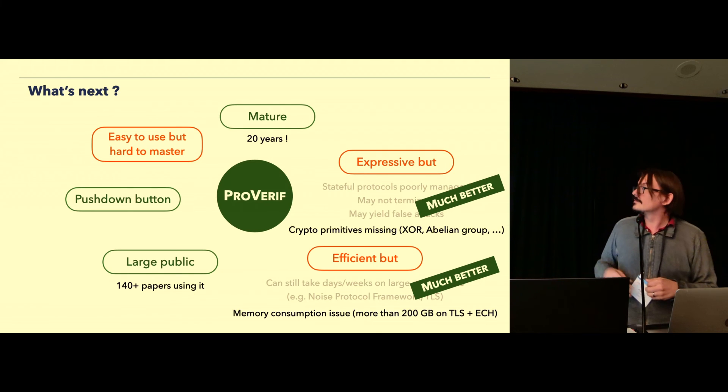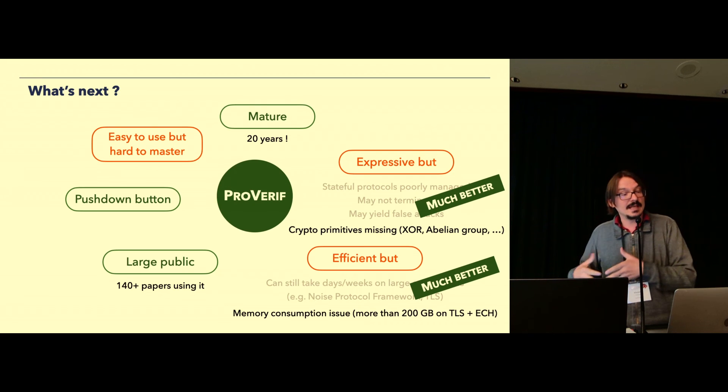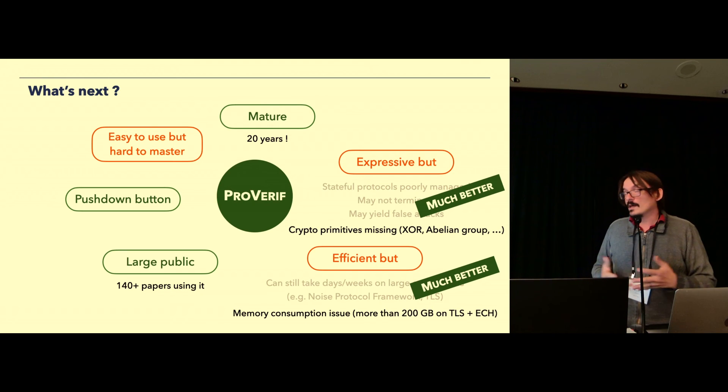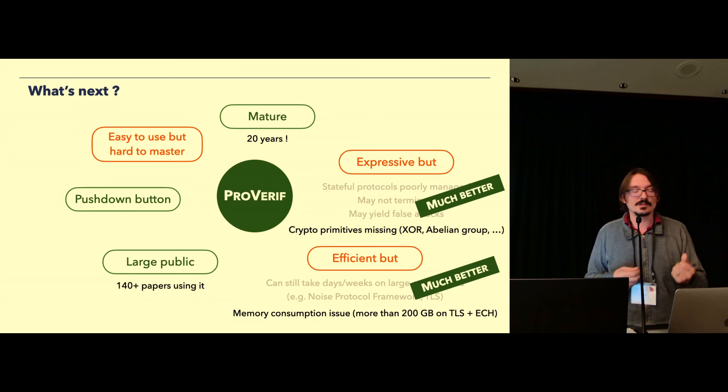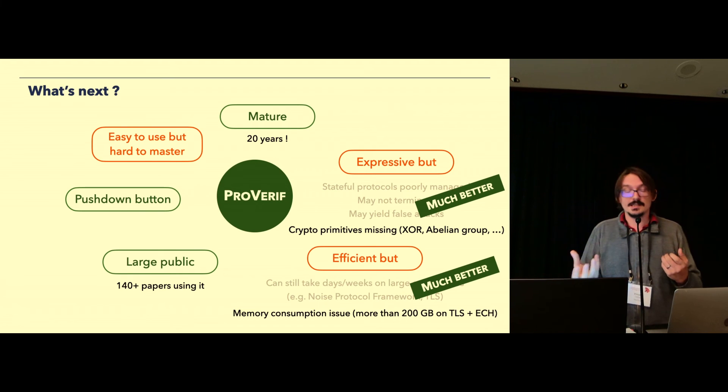And finally, I put now the easy to use in orange, because now that we have many features, additional ones, it's a bit harder as a user to understand how to properly use the lemmas and axioms, which features to activate or not. So we are trying to see how we can more automatically detect or guide the user how to, which features to use in which cases.